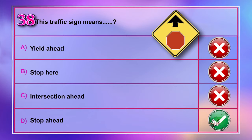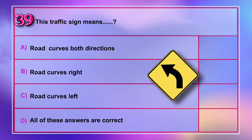Question number 39: This traffic sign means A) road curves both directions, B) road curves right, C) road curves left, D) all of these answers are correct. Correct answer is C: road curves left.